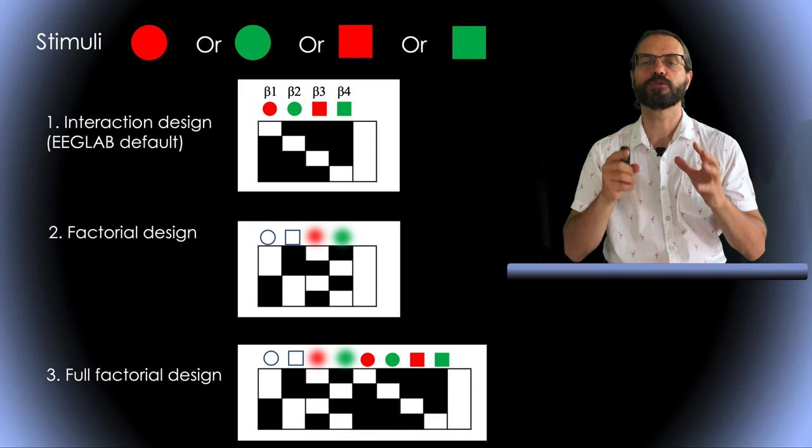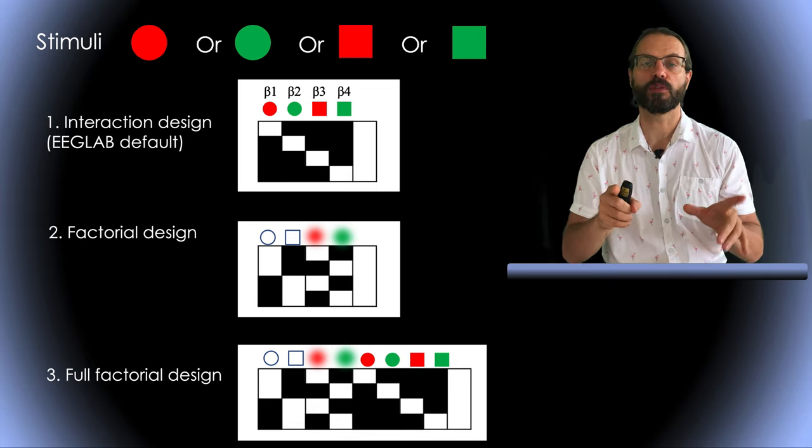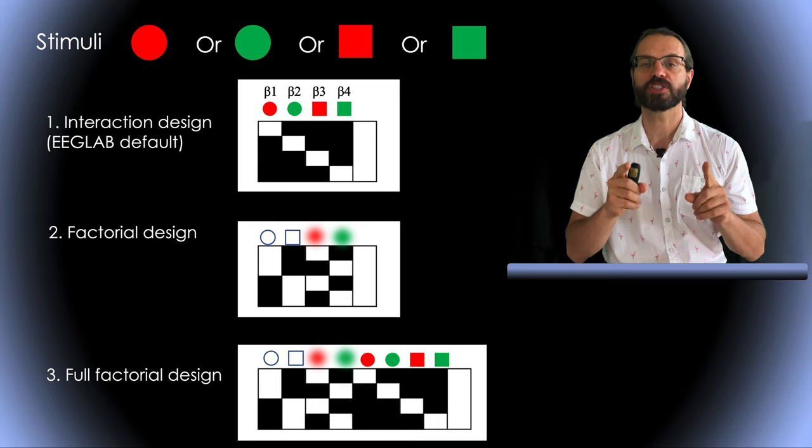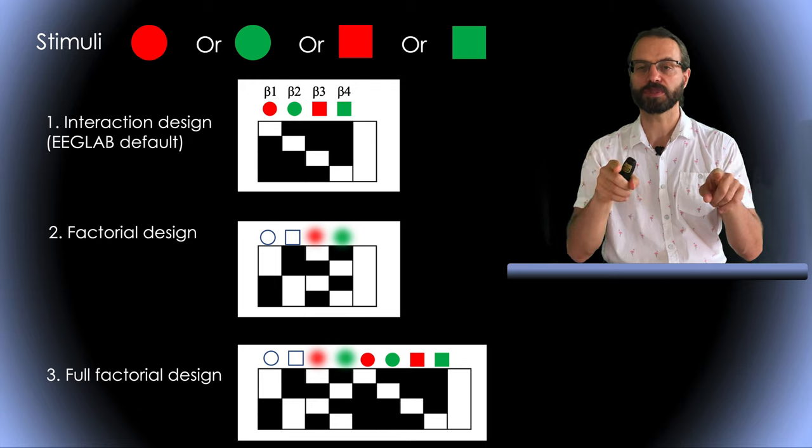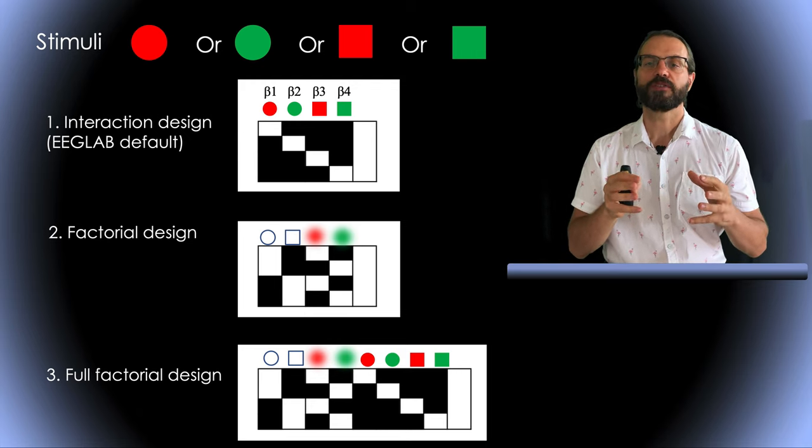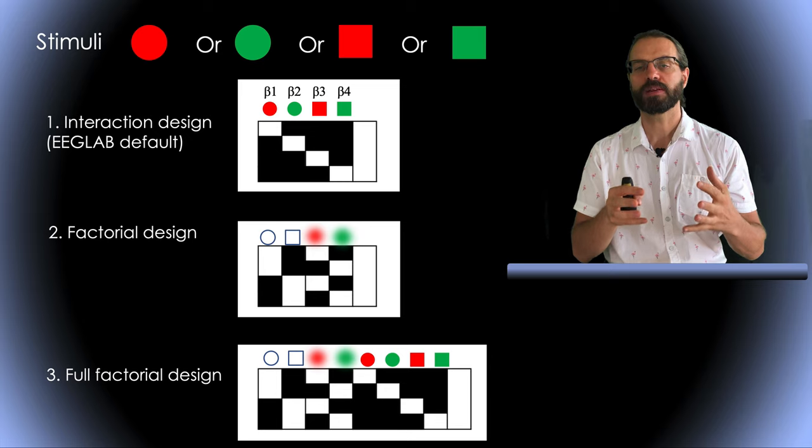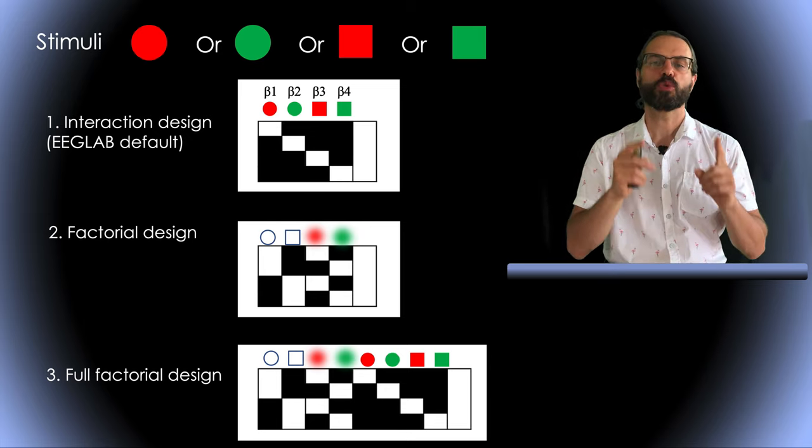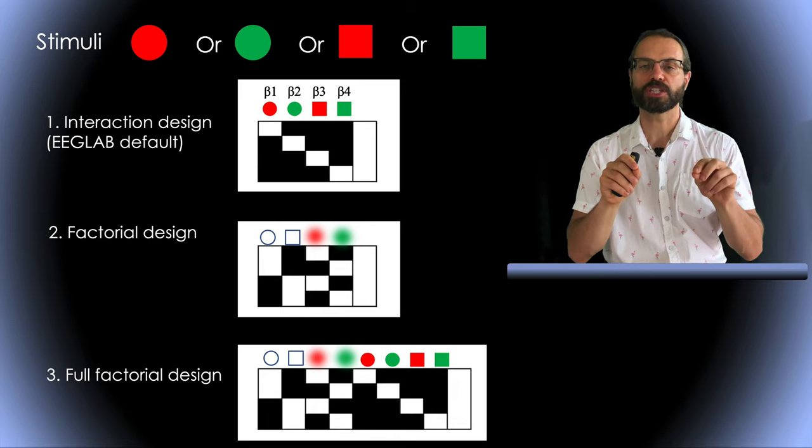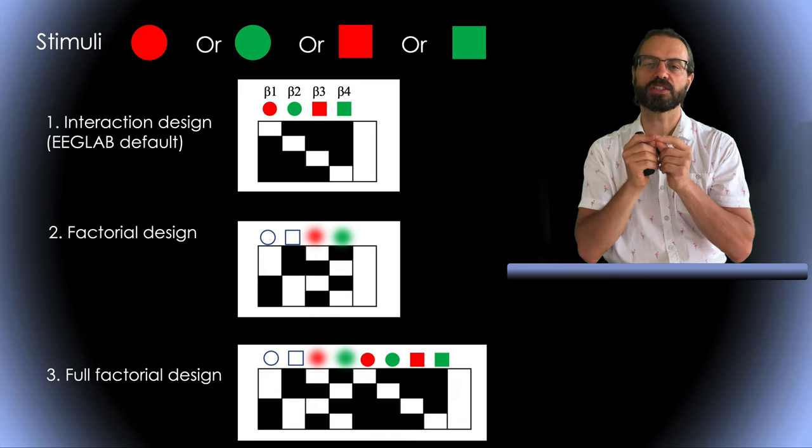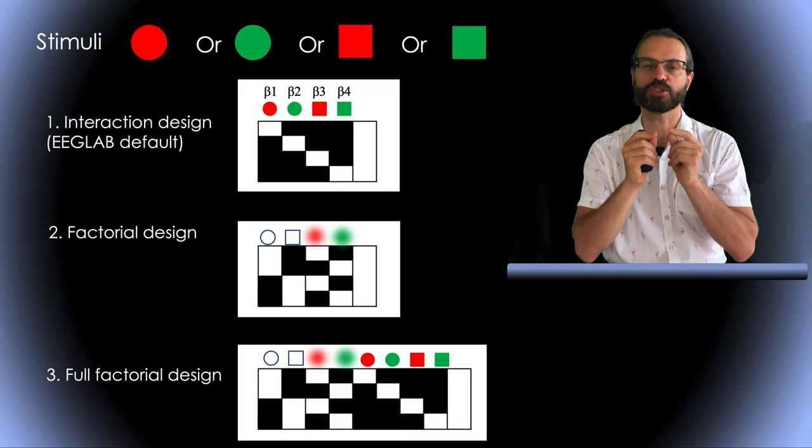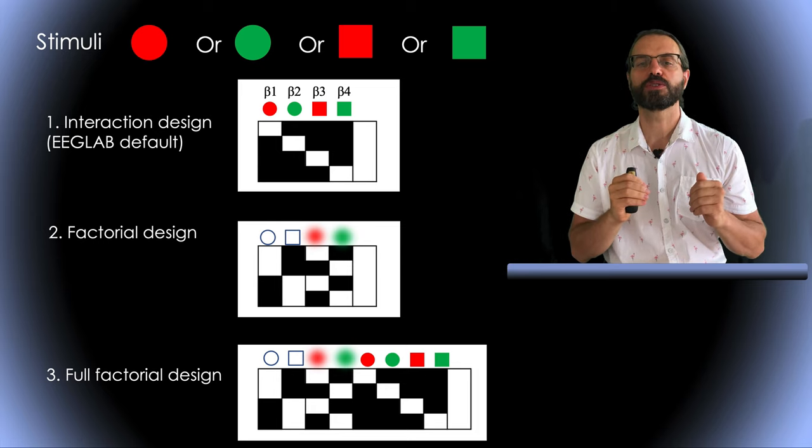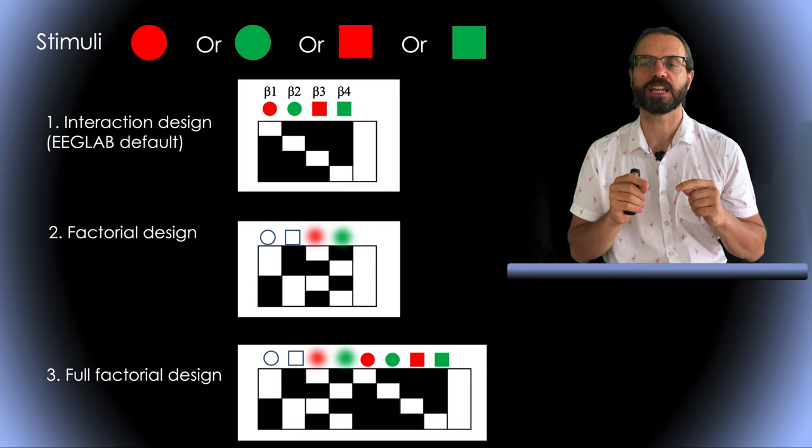A third design, which is called the full factorial design, will combine both. It will model both main effects of each stimulus characteristics and interaction between them. What do I mean by interaction? For example, it might be that shape has an effect on the EEG, that color has another additive effect, but that red square has a very special effect. There is an interaction between the two characteristics, red and square, that leads to unique EEG characteristics.